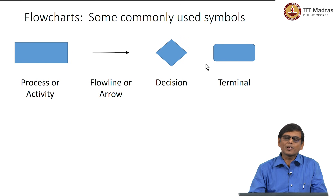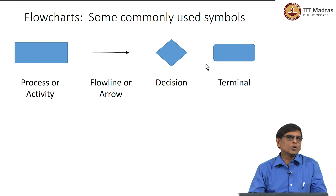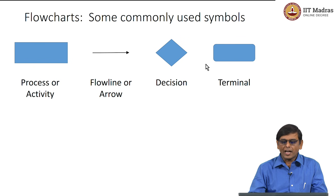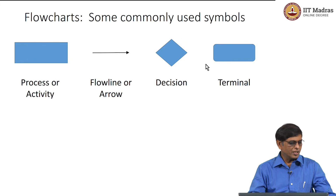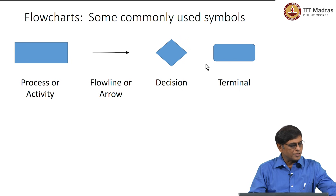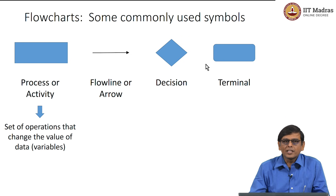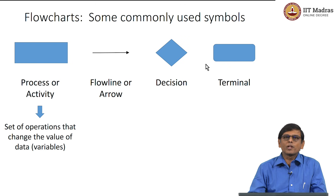For this diagram there will be a few basic constructs or symbols that we will be using. There are many more symbols typically used in flowcharts, but for the purpose of these lectures these four symbols will suffice. There is a rectangular box in which we can write things, then there is an arrow, there is a diamond, and there is an oval-shaped box. The rectangular box is called a process or activity and it is used to write down a set of operations that can change the value of some data.